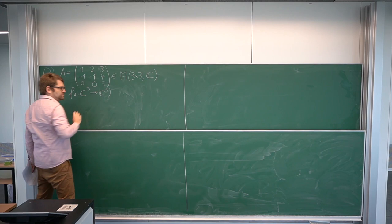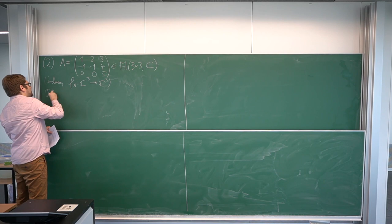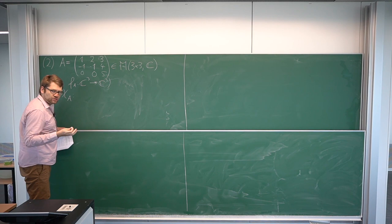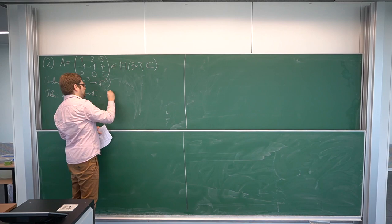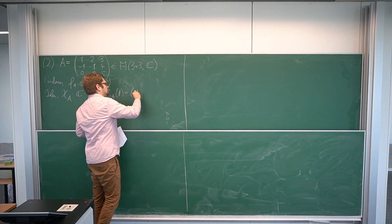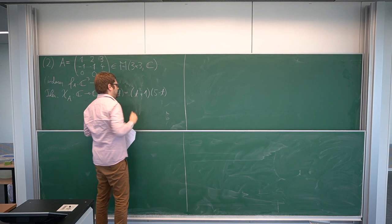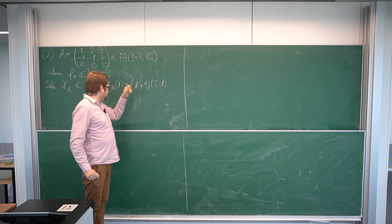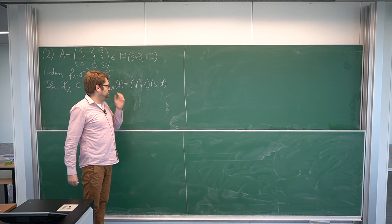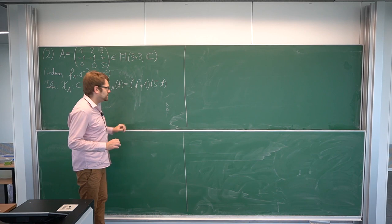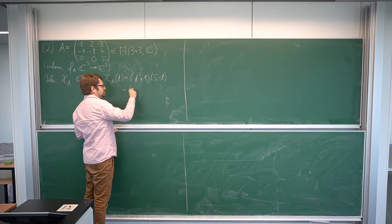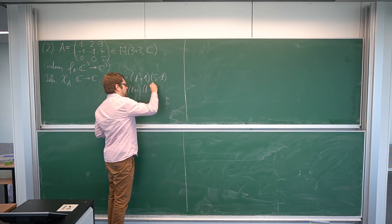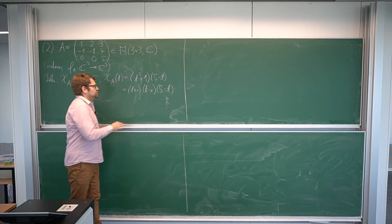Now we have a different situation. We view the characteristic polynomial of A as a complex polynomial, allowing for complex variables. The computation gives us chi_A of t is the same as t squared plus 1 times 5 minus t. This factor t squared plus 1 equals zero has a complex solution: t squared equals minus 1, giving us the imaginary numbers. We can then write this as a product of factors: t plus i times t minus i times 5 minus t.